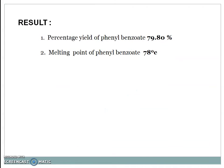Result: percent yield of phenyl benzoate is 79.80%. And the melting point of phenyl benzoate is 78 degrees Celsius.